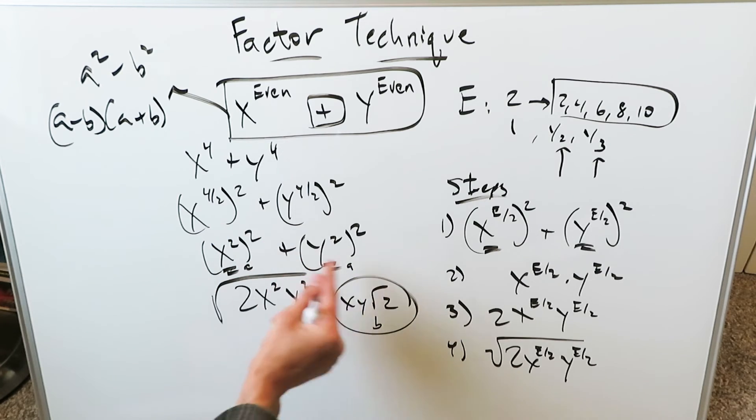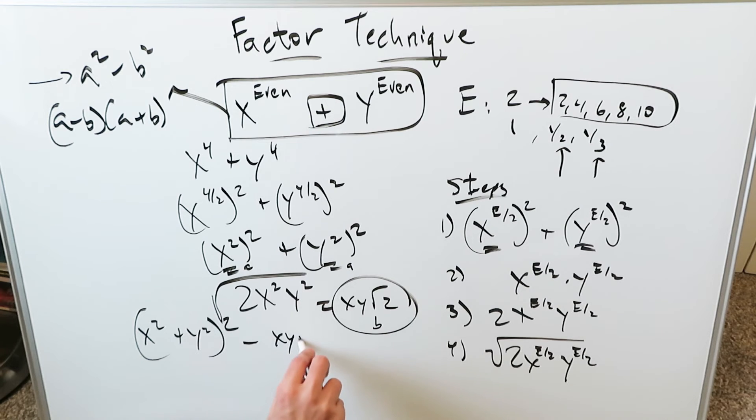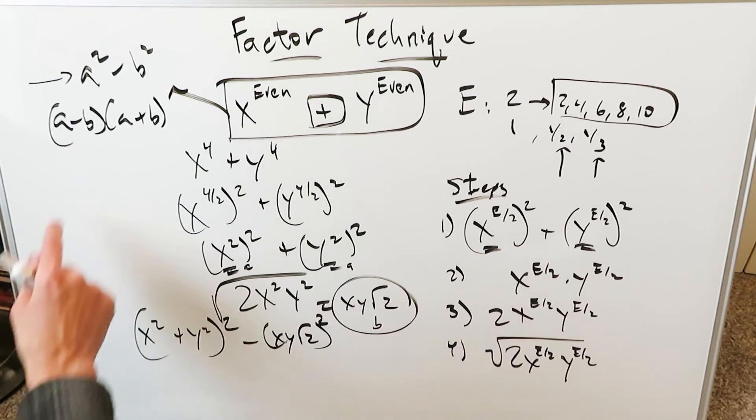Rewrite these terms that you set aside into this form first, and you will do it. It will be x squared plus y squared whole square minus b squared, which is x, y, root 2 whole square. Here is my a squared minus b squared, and we're good. You are only one step away from determining the factors, and that's this step right here. You write it into this form, and that right here will be your answer.